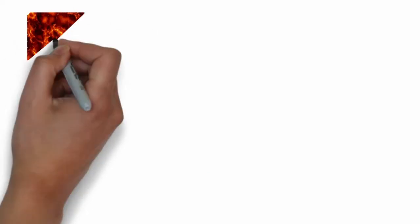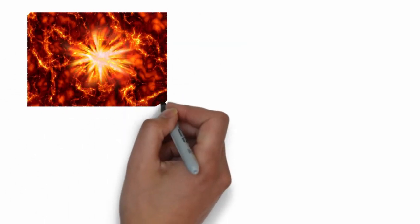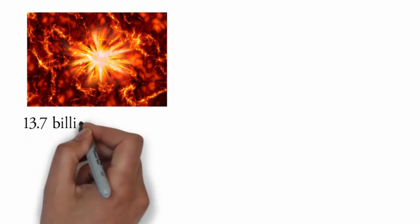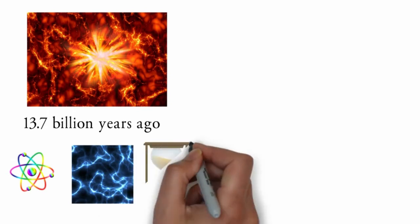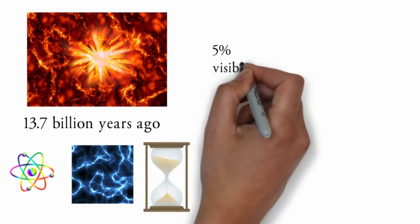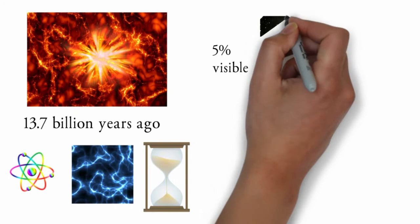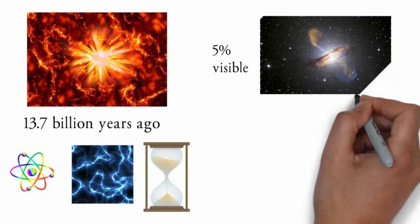The universe came into existence with a massive explosion known as the Big Bang, about 13.7 billion years ago. This resulted in the creation of subatomic particles and fundamental forces acting in the universe, which led to the formation of galaxies and stars. The visible universe, which can be observed and seen, is only 5% of the universe and consists of hundreds of billions of galaxies and hundreds of trillions of stars.